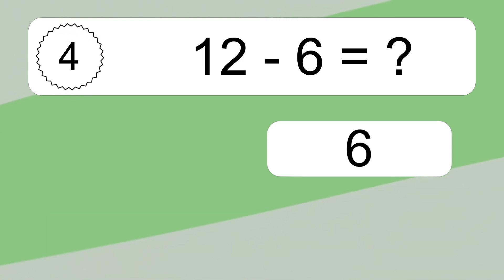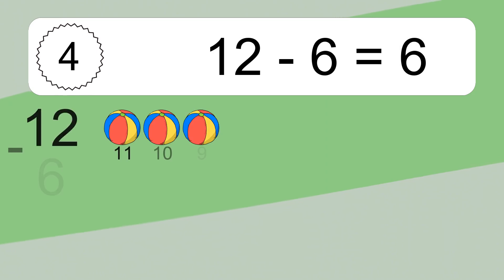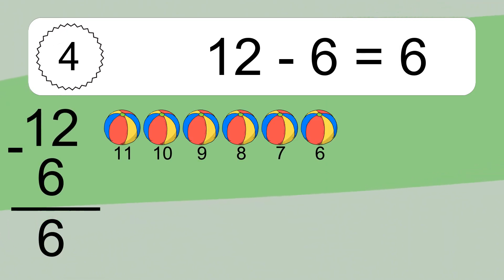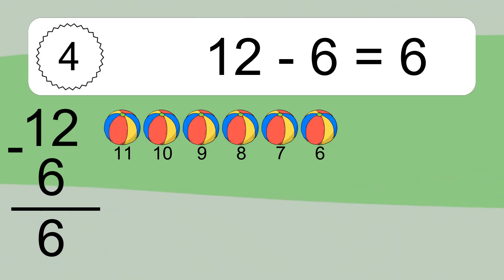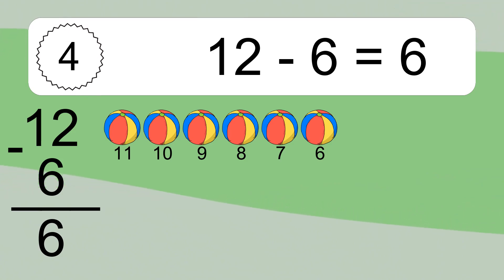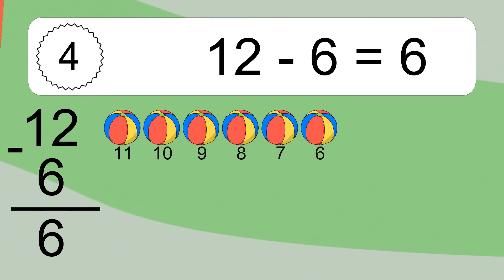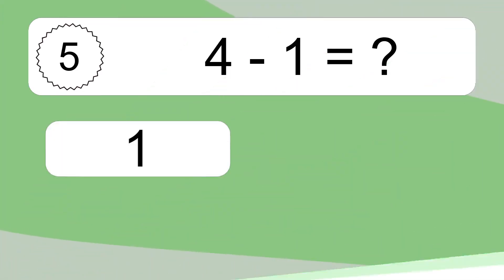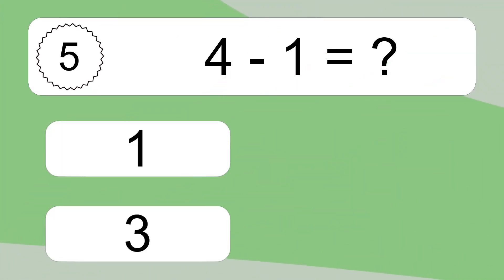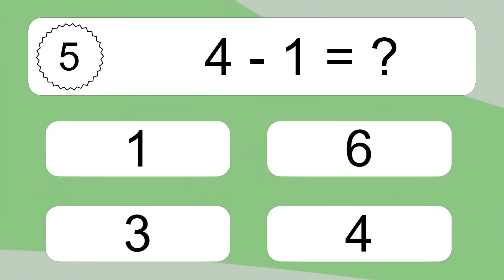12 minus 6 equals what? 12 minus 6 equals 6. Let's count it: 11, 10, 9, 8, 7, 6.